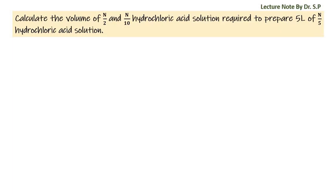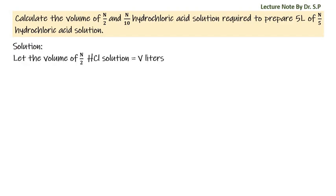We have a question: calculate the volume of N/2 and N/10 hydrochloric acid solution required to prepare 5 liters of N/5 hydrochloric acid solution. Let the volume of N/2 hydrochloric acid solution be equal to V liters, and the volume of N/10 hydrochloric acid solution be equal to 5 minus V liters.